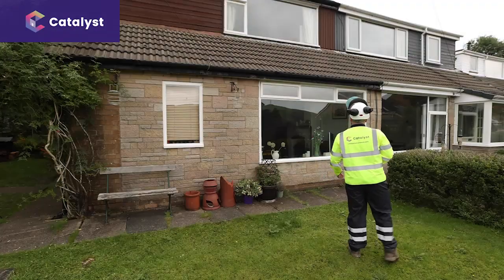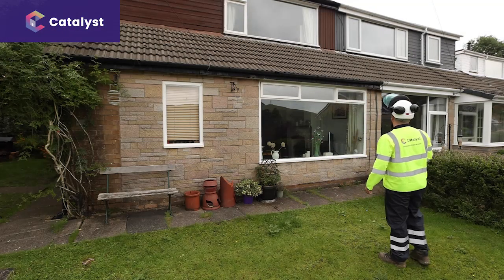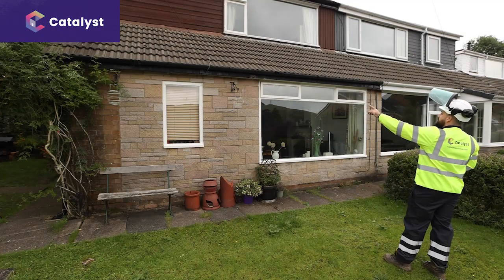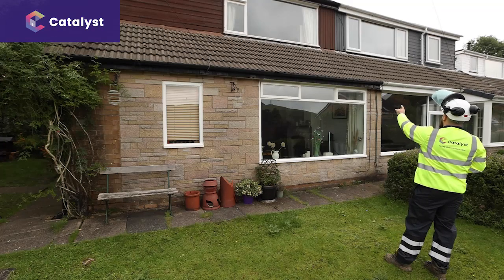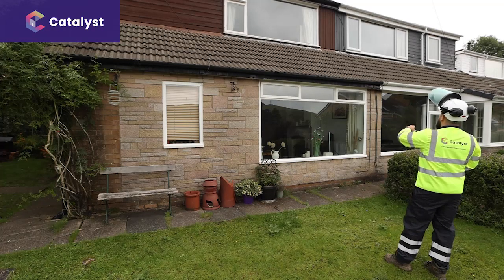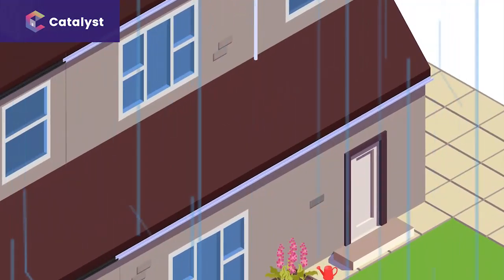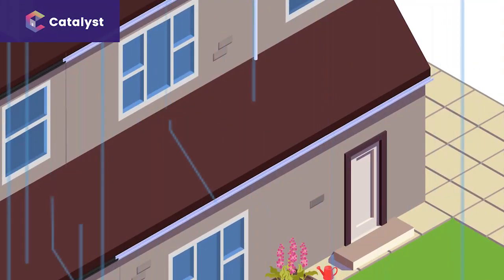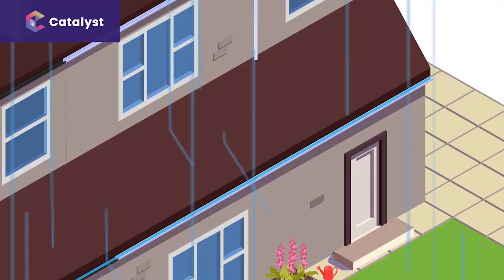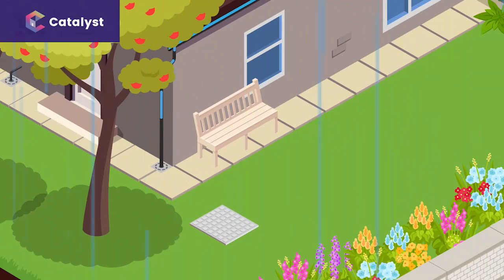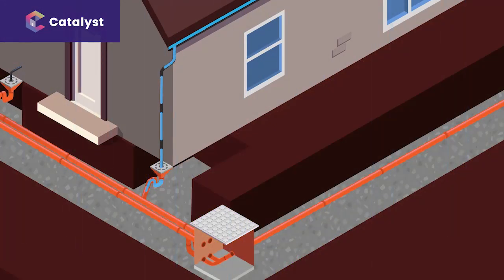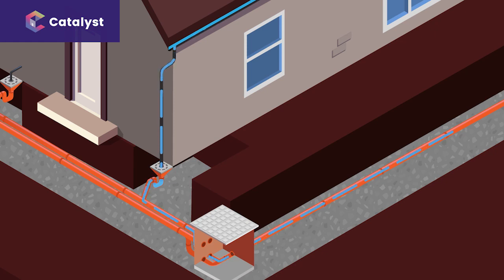Another important task is to check the gully connections. This establishes where the water it takes comes from and who derives the benefit. As we can see, this is a shared gully — it takes water from our customer's gutters and those of their neighbours. Both properties derive benefit from the same drainage system. Therefore, as it's shared, it's the responsibility of the local water company to maintain serviceability.